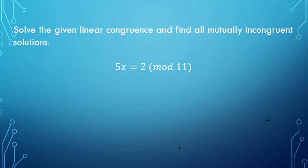So in this video, we're going to go through a few more sample problems just to get ourselves more practice with it and get more comfortable with this method that we use. So we're going to solve the given linear congruence, and we're going to find all mutually incongruent solutions at the same time. So our linear congruence here is 5x is congruent to 2 mod 11.